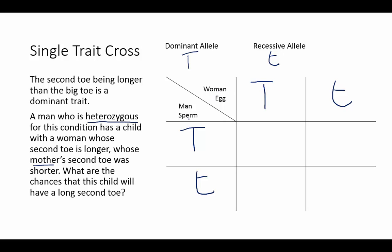Now that we know both parents are heterozygous, we can look at our Punnett square. We always take one allele from the top and one from the side for each box. In the first square, we get one big T from the top and one big T from the side, giving us two big T's. In the second square, we bring one T from the side and one T from the top, giving us one big T and one small t.